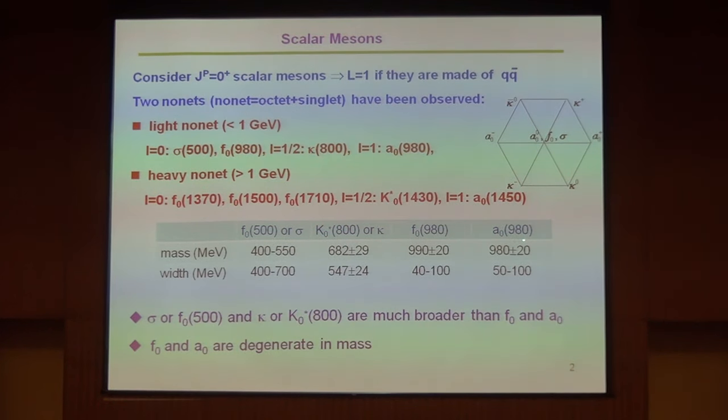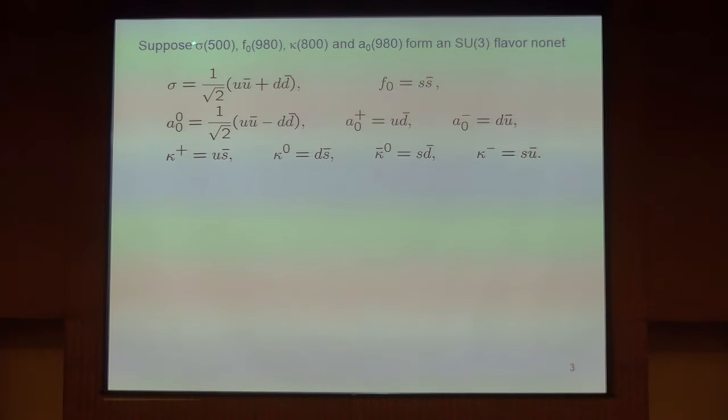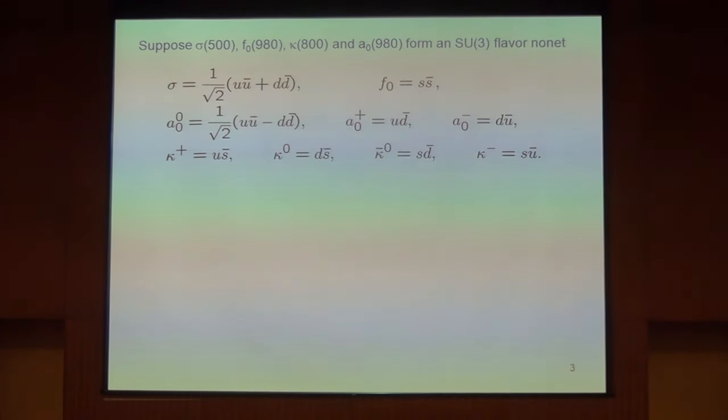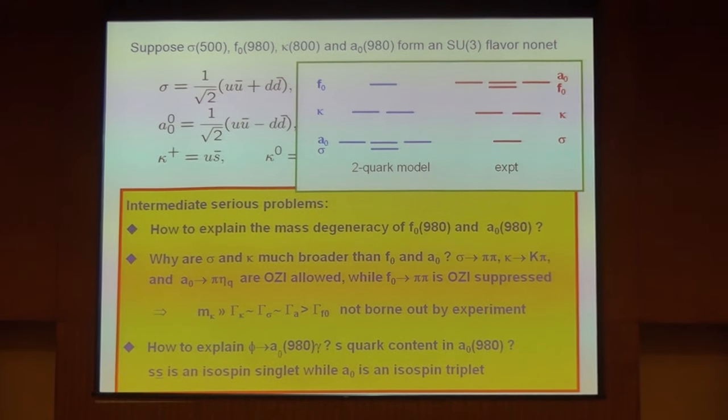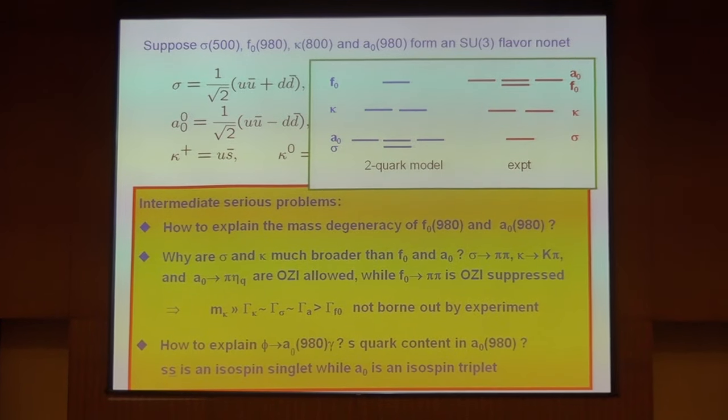In the two-quark model, the quark content of the scalar mesons is given in this table. Then we encounter some difficulties. First of all, it is difficult to understand why the masses of a₀ and f₀ are degenerate.